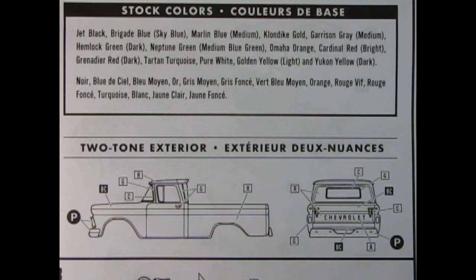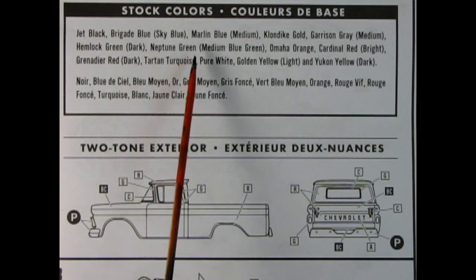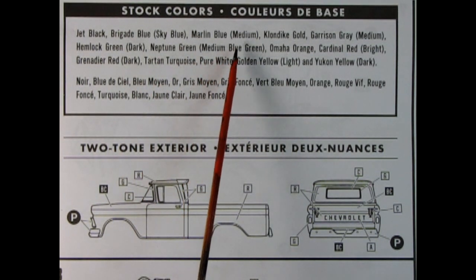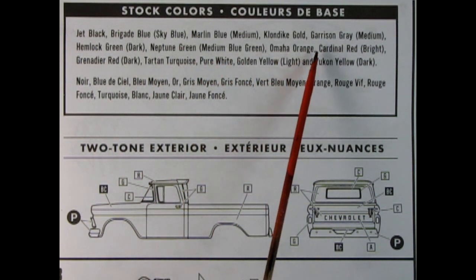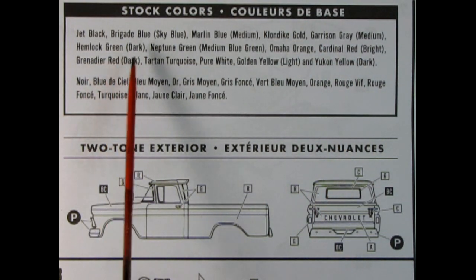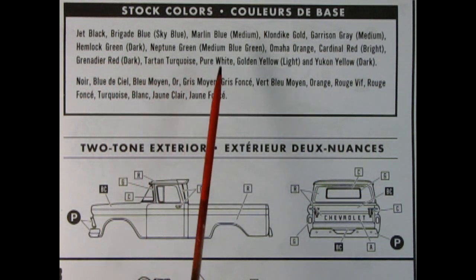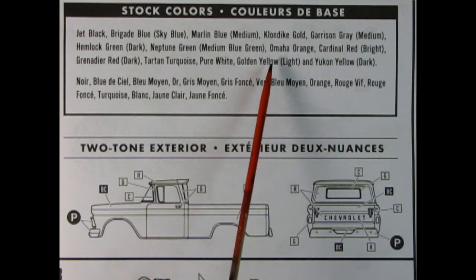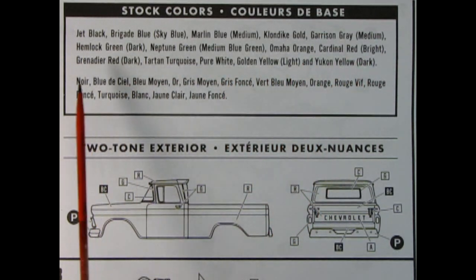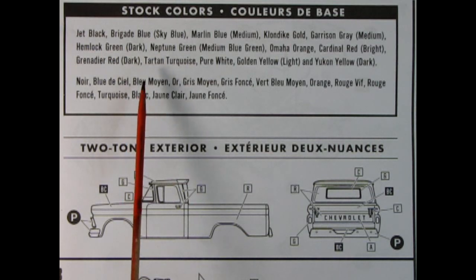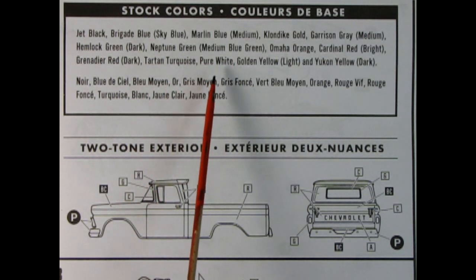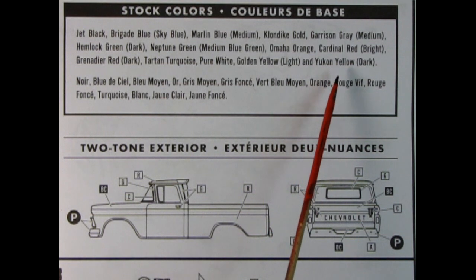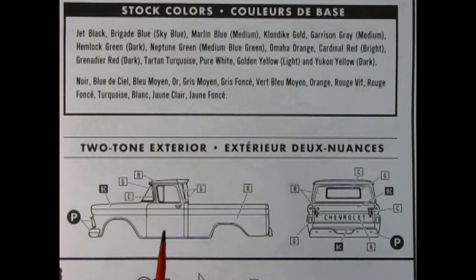And bringing you the best that is the best, we have our stock colors right here, which includes Jet Black, Brigade Blue, Sky Blue, Marlin Blue which is a medium blue, Klondike Gold, Garrison Gray medium, Hemlock Green dark, Neptune Green medium green blue, Omaha Orange, Cardinal Red bright, Grenadier Red dark, Tartan Turquoise, pure white, golden yellow which is light, and Yukon yellow which is dark. And here's how to set up your two-tone paint jobs.